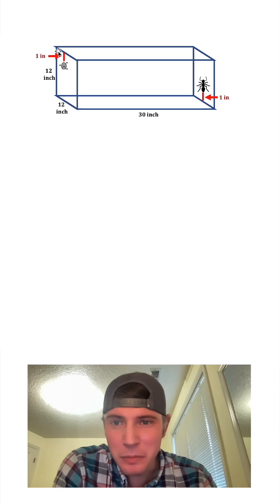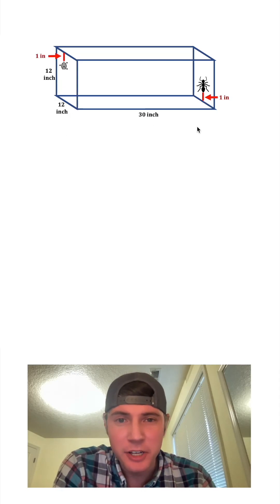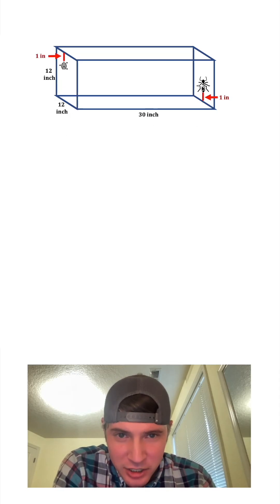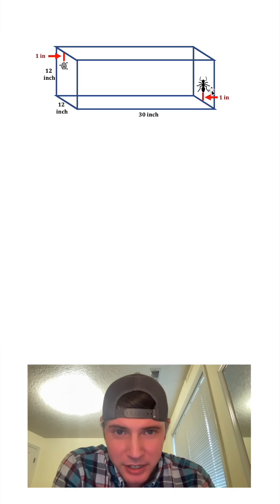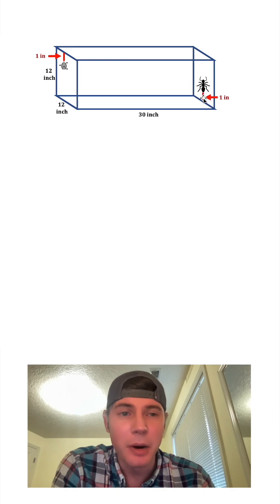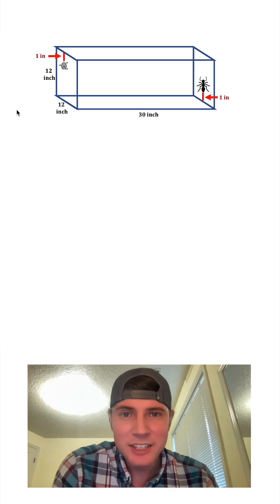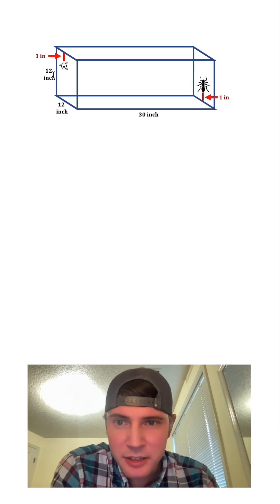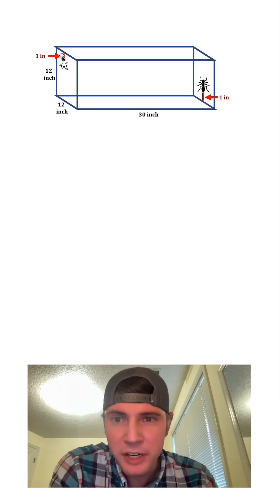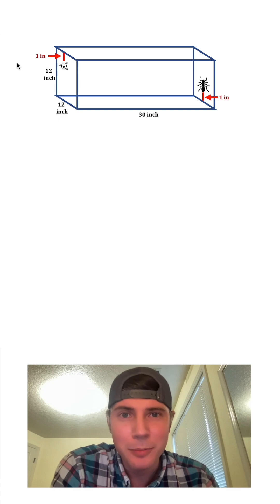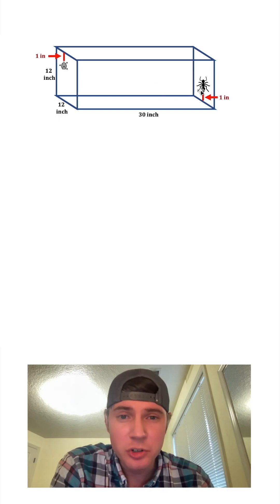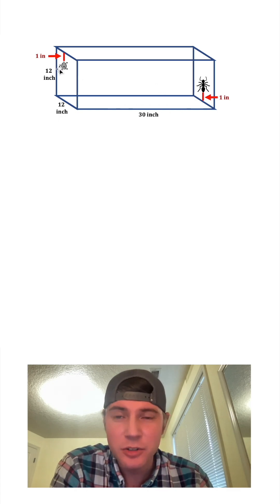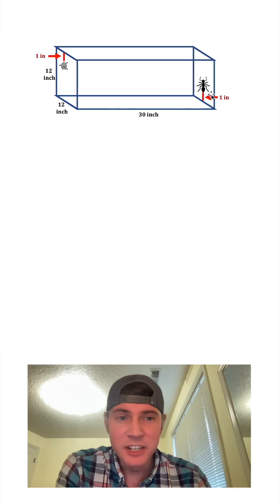Hey guys, this is a fun one. We have a box — it's 12 by 12 by 30. There's an ant chilling in the middle right here, one inch from the bottom of the box, and some honey located in the middle here, one inch from the top. What is the shortest route that this ant can take to get to that honey?